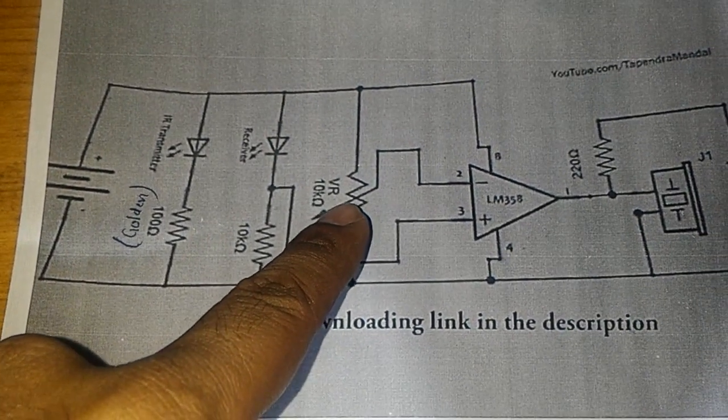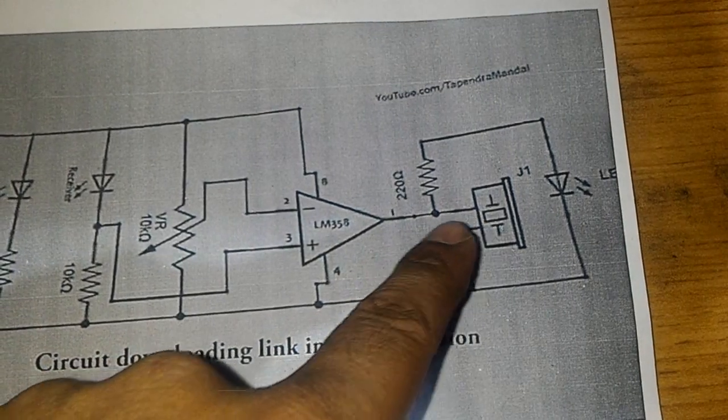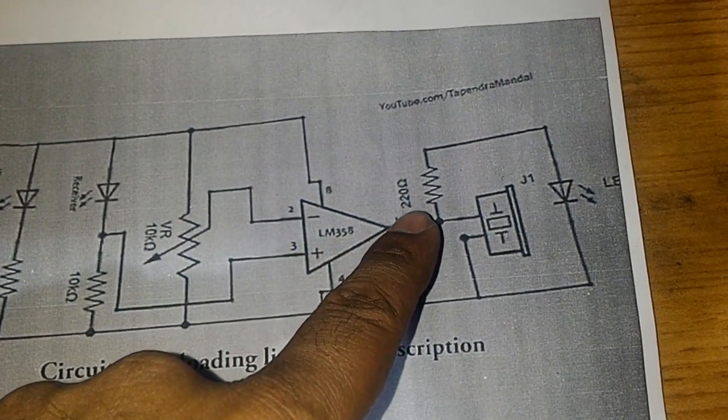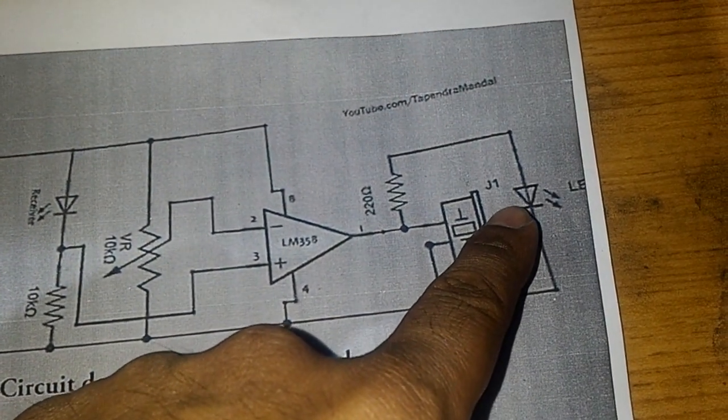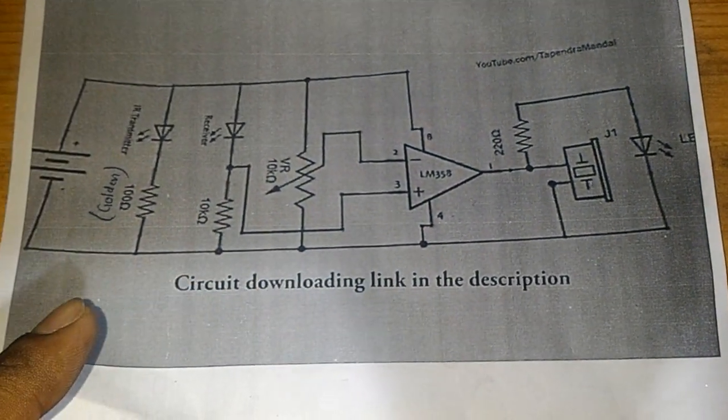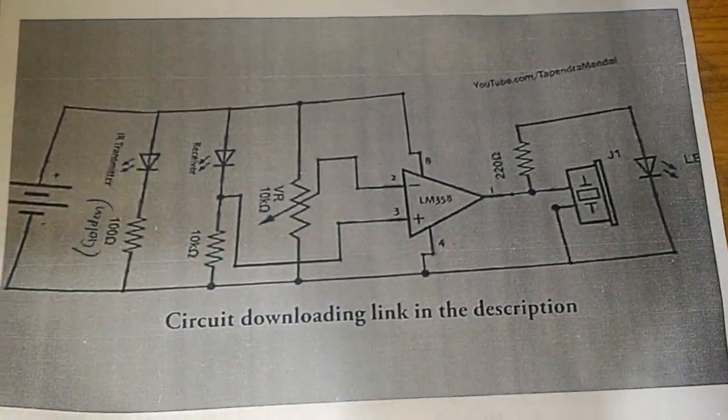Here there is a buzzer connected to the output of the comparator and there is an LED also. This gives you a visual indication of the output. This is a very simple circuit. Now let's see the actual circuit which we have built.